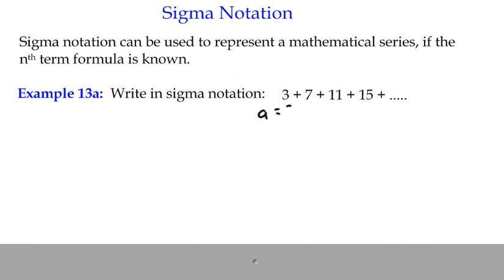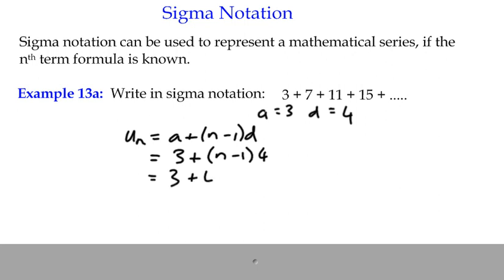Well, we know that a is 3 and the common difference is 4, which means that the nth term is a plus n minus 1 multiplied by d, which is 3 plus n minus 1 times 4, and we can multiply that out to get 4n minus 1.